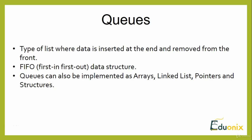Queues are another data structure, similar in kind to what we understood for arrays, lists, and stacks. Queue is a type of list where data is inserted at the end and removed from the front. It is a first-come, first-served kind of data structure. Everything stored in a queue is in a particular order, and that order is decided based on occurrence.